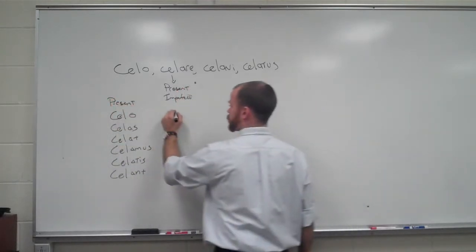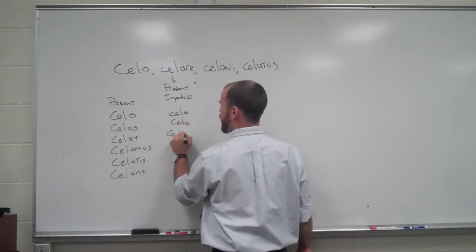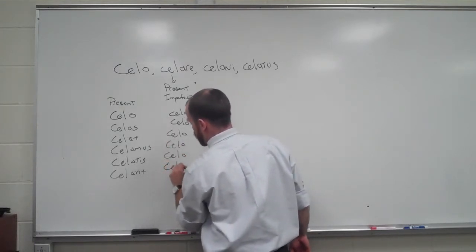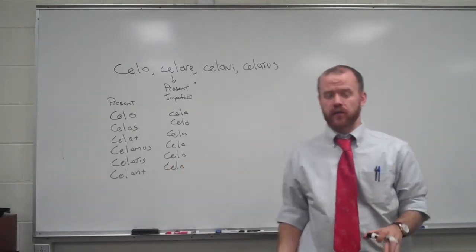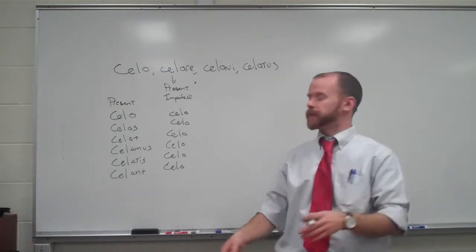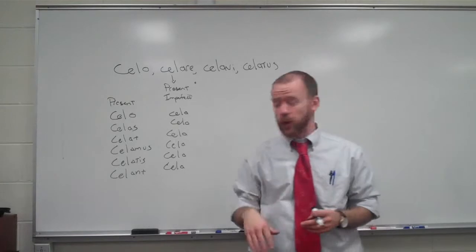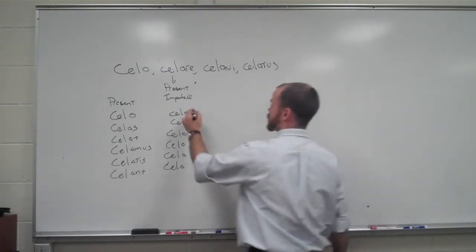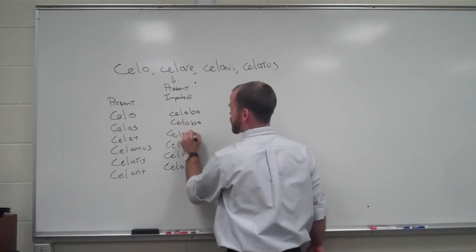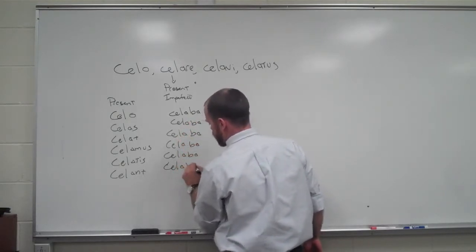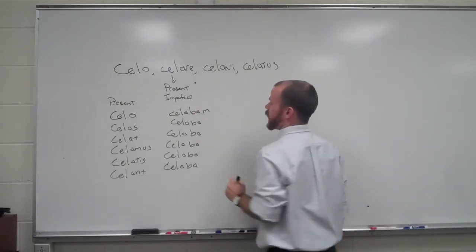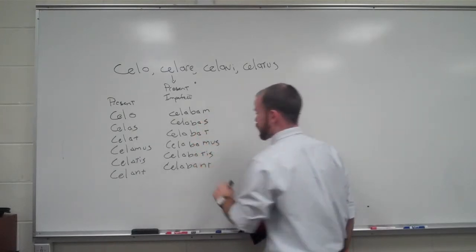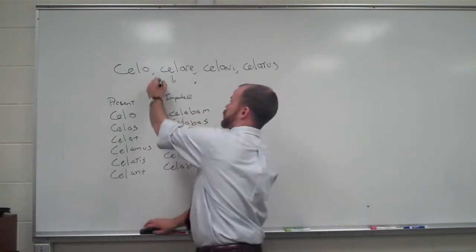Imperfect: take that same stem. Now we have to add a tense indicator. Remember, when you translate the imperfect, you want to say someone was verbing. The tense indicator of the imperfect is BA. So we add that tense indicator on, then add our endings. This time, instead of an O, we add an M — but the rest stay the same: S, T, mus, tis, ent. So there we have it — our present and our imperfect tenses, both coming from that second principal part.